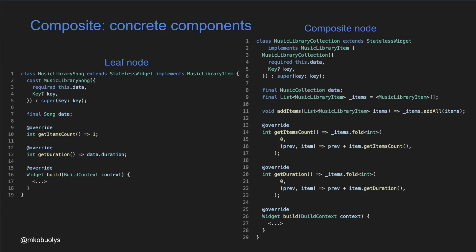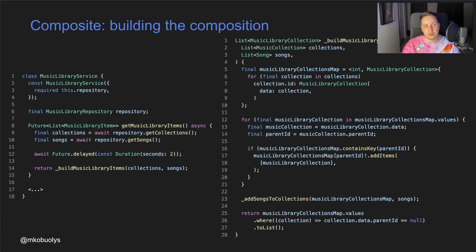In addition, leaf and composite nodes also extend StatelessWidget, which allows us to build these components as standalone widgets if needed. This code shows how we build the tree data structure used in our example app. We retrieve the required music library information — collections and songs — and then build the whole composition. We put every collection into a map used as a lookup table, then inside a for loop we check whether each collection item contains a parent ID. If yes, it belongs to another collection and we assign it accordingly. Then we add songs to their corresponding collections, and lastly return a list of top-level collections — our music library visible in the app's UI.